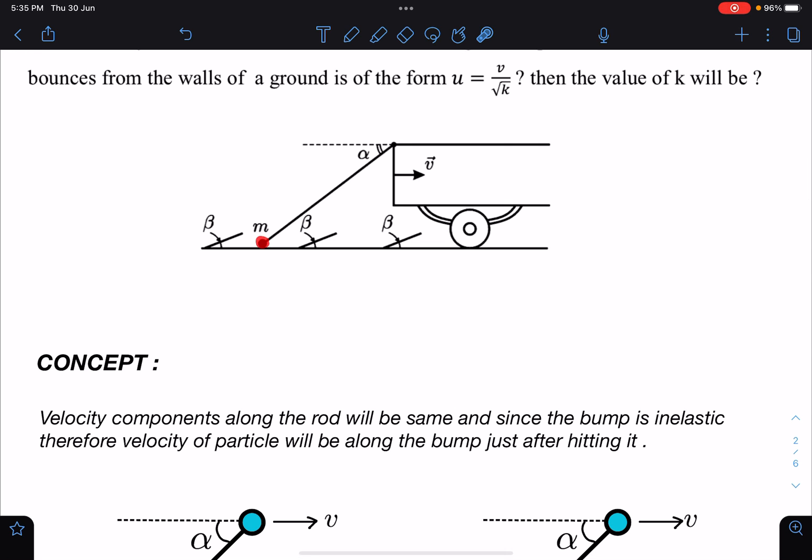First thing is this is the load which is connected to this car here. Rod makes this constant angle α all the time and it is moving in horizontal direction. Initially the situation will be they both will have equal speed and these angles are fixed.